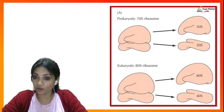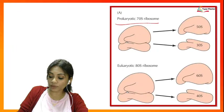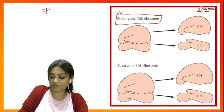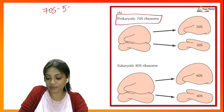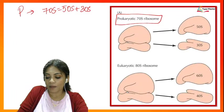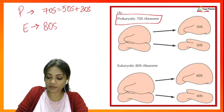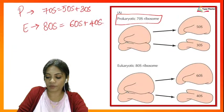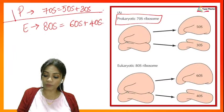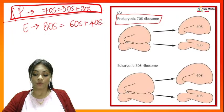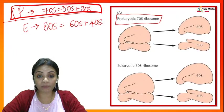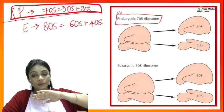The prokaryotic ribosome is 70S (50S + 30S). The eukaryotic ribosome is 80S (60S + 40S). In the next lecture, we will be continuing this chapter and learning more about the cell organelles belonging to the eukaryotic cell — prokaryotes were all about bacteria, and eukaryotes will be all about plant as well as animal cells.